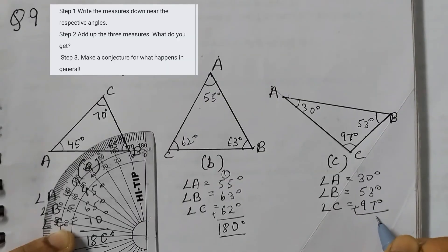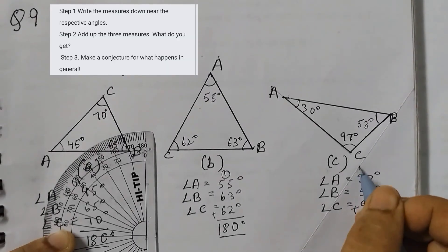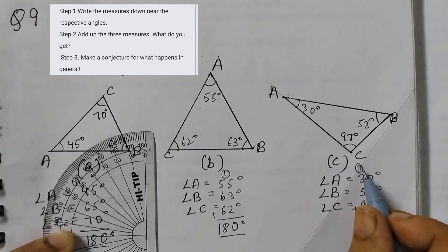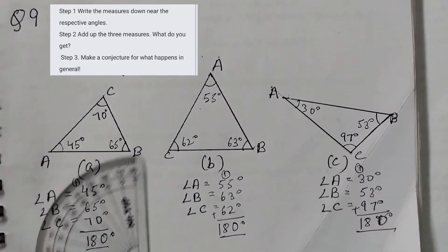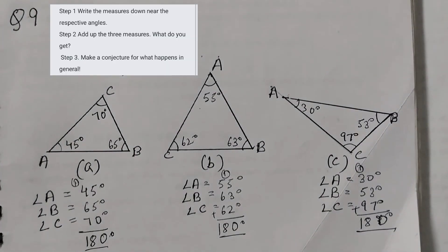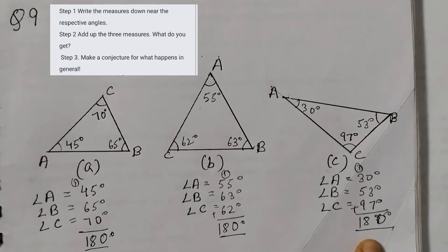Add it up. 7 plus 3, 10. 5 plus 3, 8, 9, 18. 180 degrees. So here also 180, 180 and 180.